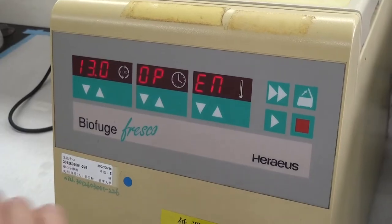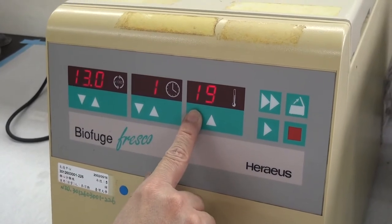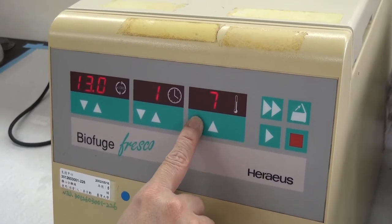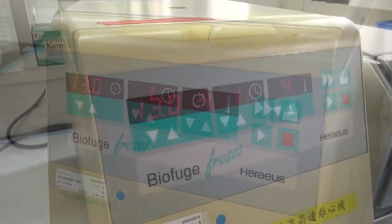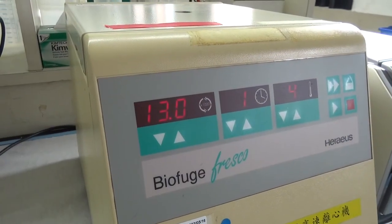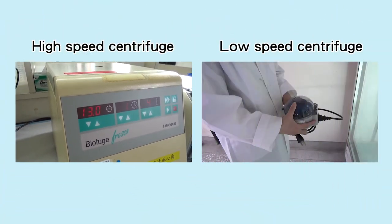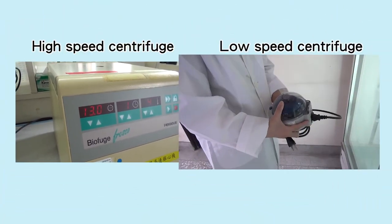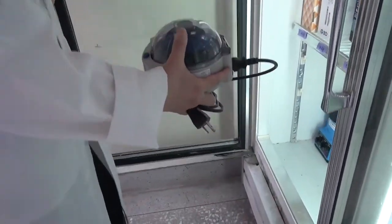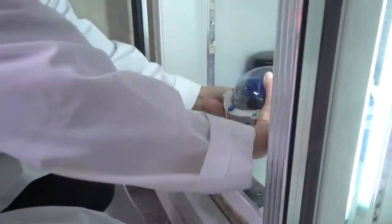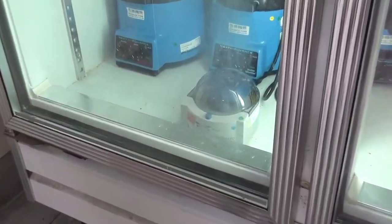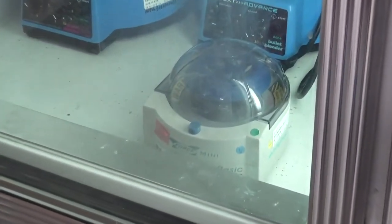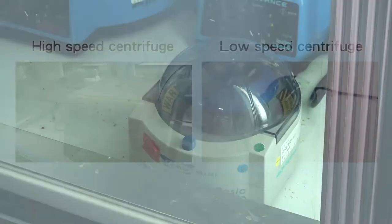If low temperature is required, the centrifuge must be set to pre-cool to a certain temperature. Remember to close its top lid to maintain low temperature. If the centrifuge does not have a cooling system by itself, it can be placed into a cold room or refrigerated cabinet. Continue with the operation after the required temperature is reached.